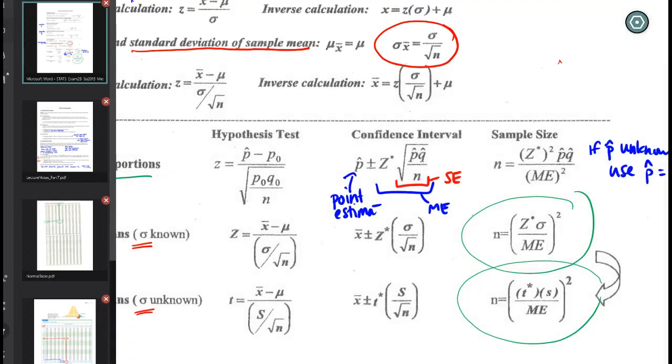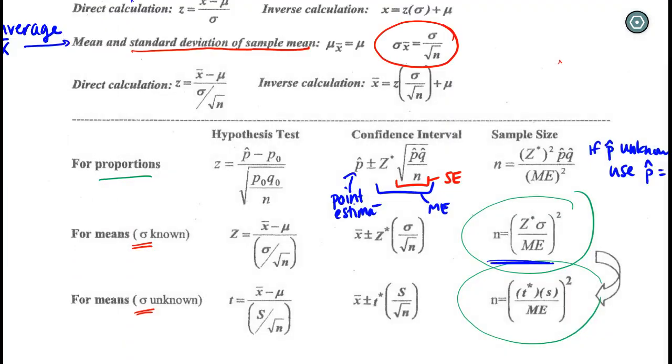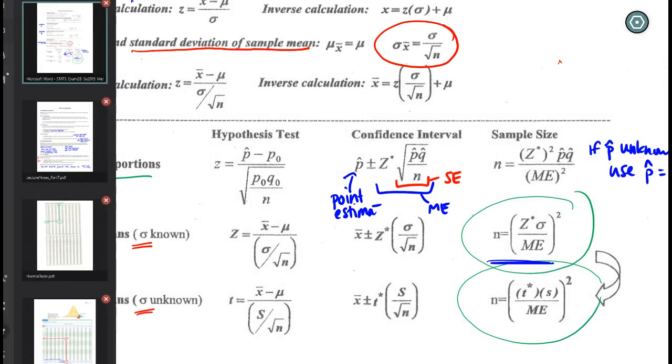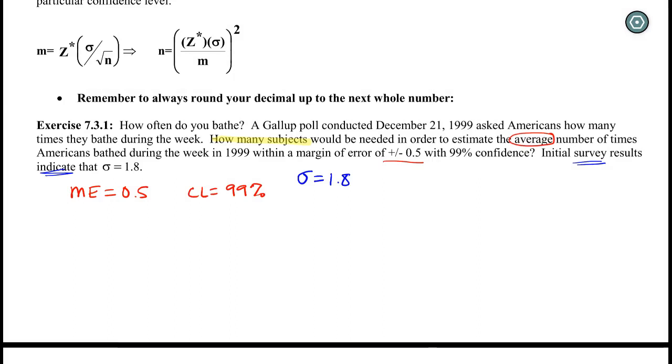the formula sheet tells us we're using this formula because we have a sigma. We're going to copy that down. N equals Z star times sigma all over our margin of error, and then that entire quantity gets squared.